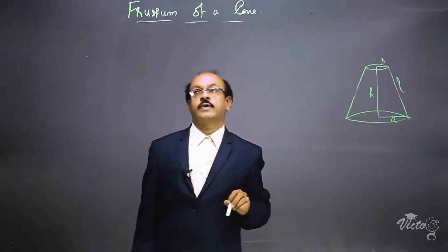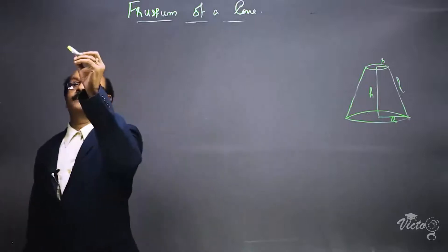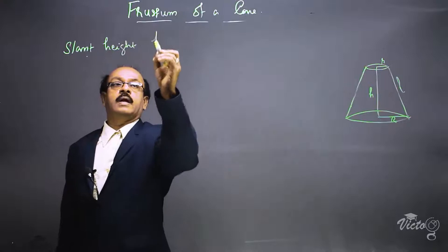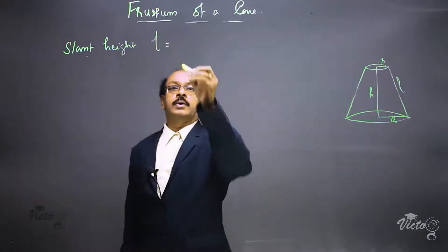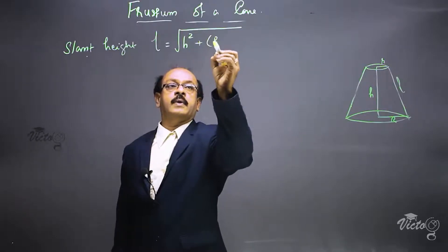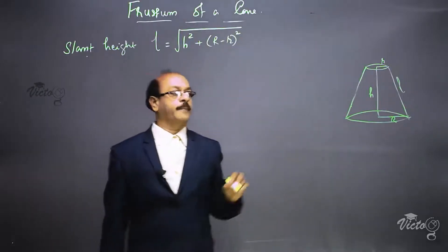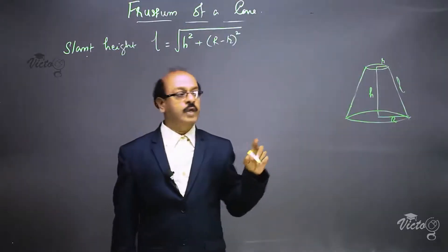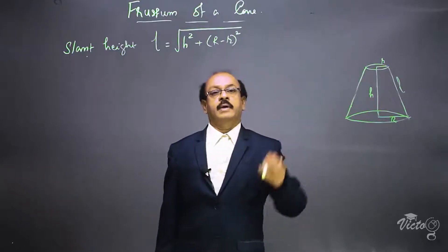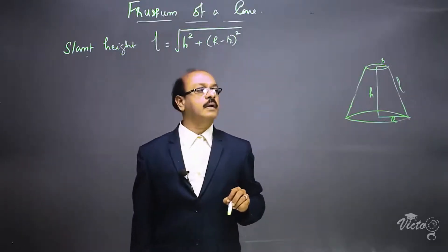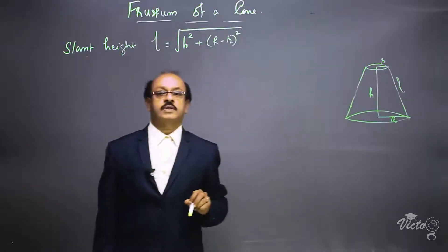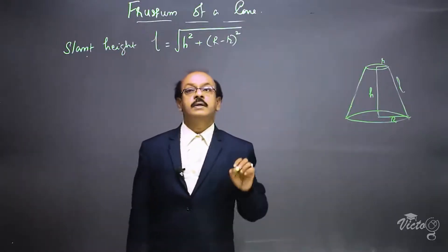The formula for finding the slant height of the frustum: slant height l is equal to the square root of h squared plus (capital R minus small r) squared. Capital R is the radius of the broader part and small r is the radius of the smaller end.